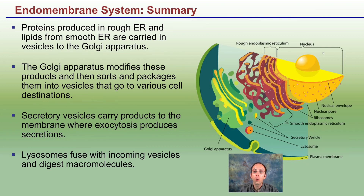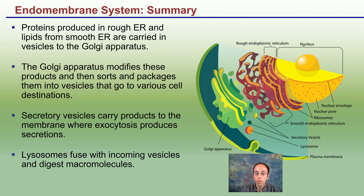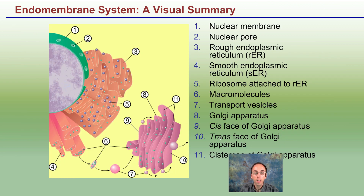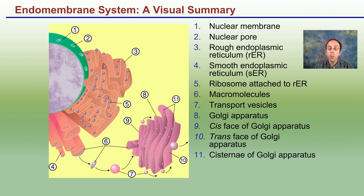As an endomembrane system summary: proteins produced in the rough ER and lipids from the smooth ER are carried to the Golgi apparatus, which modifies, finalizes, and packages them into vesicles for their final destination. Secretory vesicles carry products to the membrane where exocytosis produces secretions, and lysosomes fuse with incoming vesicles to digest macromolecules. Everything is stacked and organized to allow efficient transportation: DNA to proteins made in ribosomes on the rough ER, modified with lipids from the smooth ER, packaged in the Golgi, and released in vesicles.